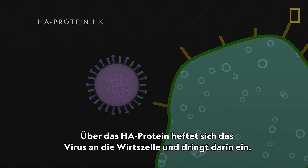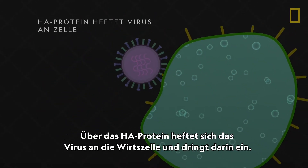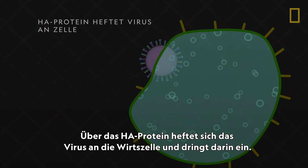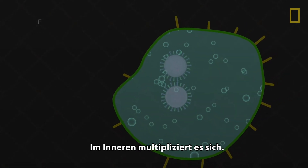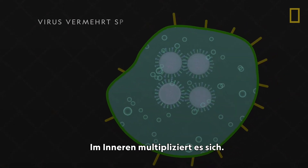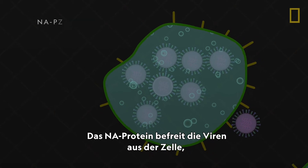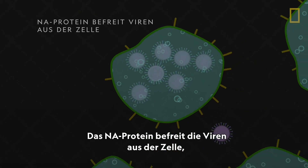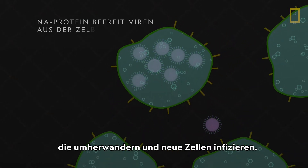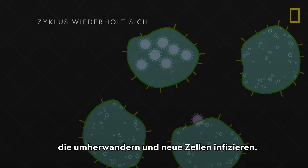The HA protein attaches the virus to a cell and lets it in. Once the virus is inside, it multiplies. Then the NA protein cuts this viral swarm loose, sending it off to infect more cells.